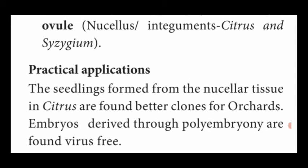The next important topic is practical application of polyembryony - this will separately come for two mark questions: write the practical application of polyembryony. New seedlings (young plants) which are produced from the nucellus tissue in citrus plant are showing better clones for orchards. Also, embryos which are produced from the polyembryony type are free from viral diseases. These two are the practical applications or advantages of polyembryony.